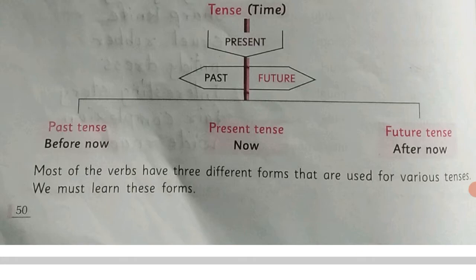Now we will take some examples. Past tense: 'Yesterday, we visited the zoo' — yesterday means it already happened. Present tense: 'Our English lecture is on' — this is happening now, so this is present tense. Future tense: 'Tomorrow, we are going to Bombay' — tomorrow is future tense. Yesterday is past tense. Now or today is present tense. Tomorrow is future tense.